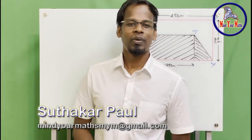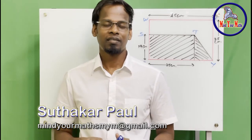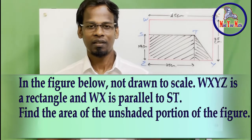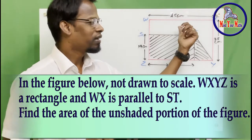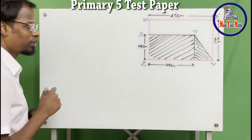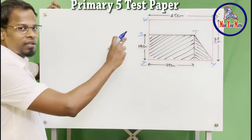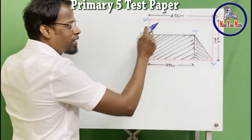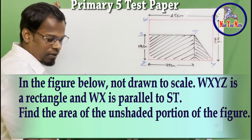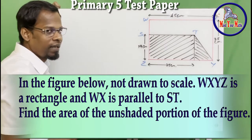Hey guys, so we've been solving the Primary 5 test paper problems. In that series we are going to solve the problem that you see on the screen today. It is talking about the figure that is on the board. So let's read the problem and see if it matches the figure. It says that in the figure given below, not drawn to scale.